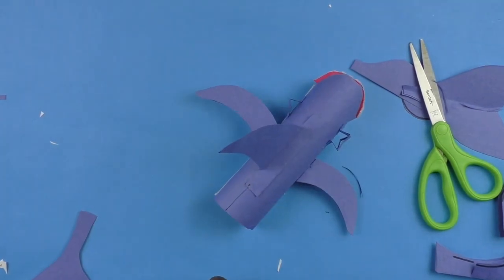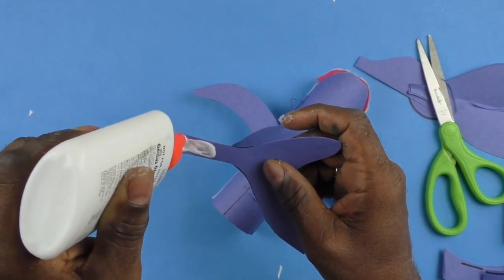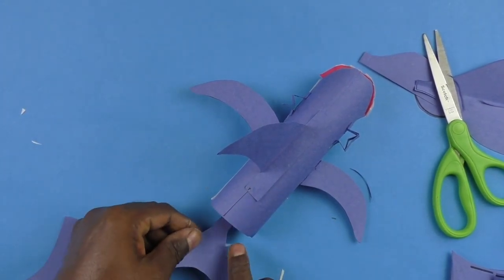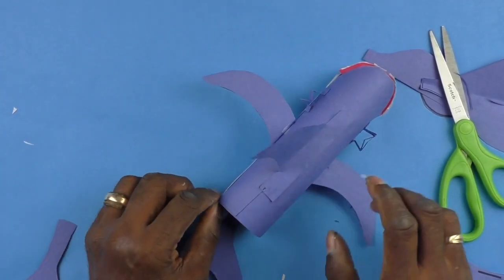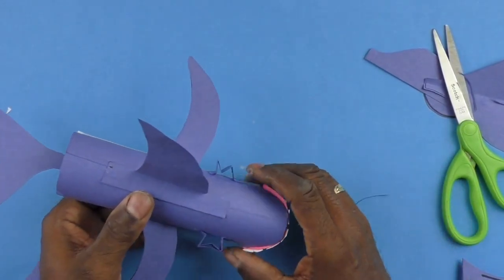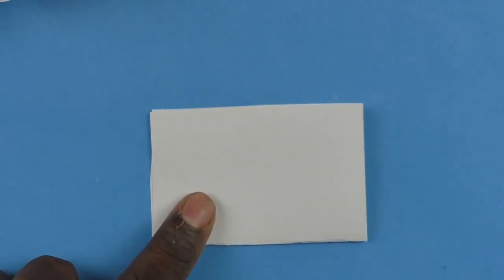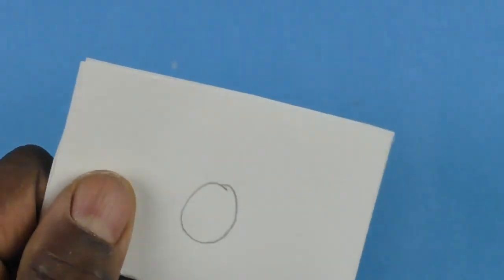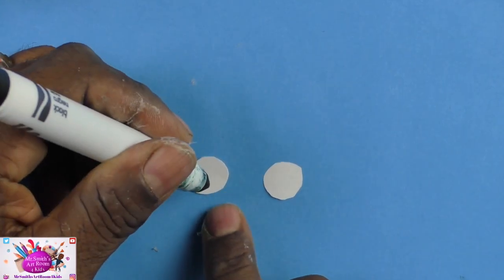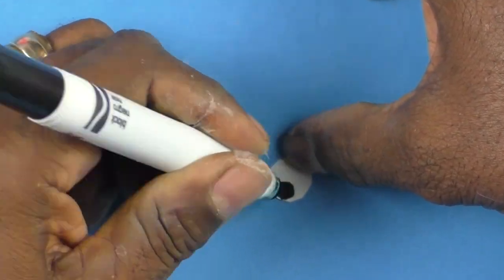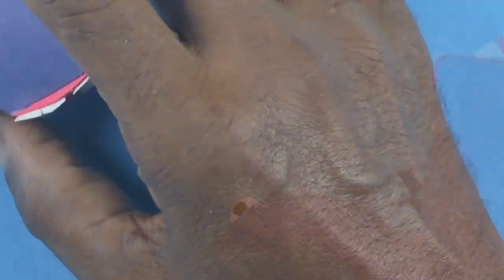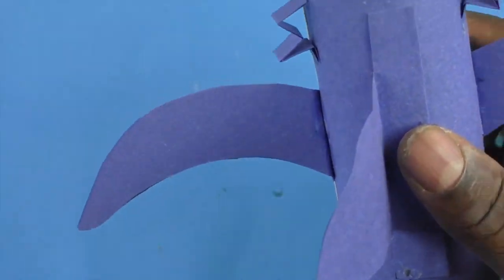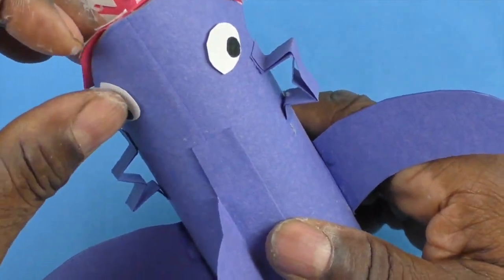We're going to put some glue on our tail and stick that to the very bottom and push that down tightly. Now we're going to get a white piece of paper, fold it in half, and draw a circle. Then we're going to cut it out and these are going to be the eyes. We now need to draw two black circles inside. We're going to glue these to each side of our shark. Well, our first paper towel tube learning buddy is all done.